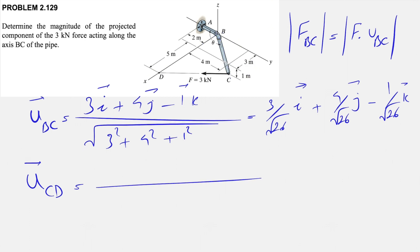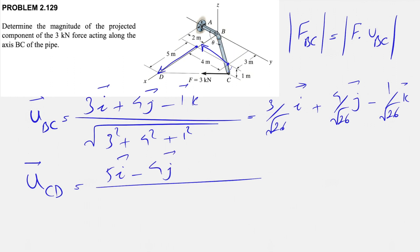Next we need to find the unit vector for CD. For the x-component, we are moving from here to here, which is 5. For the y-component, we are moving in the opposite direction so we'll have a negative sign. For the z-component, we start at −1 and go to the x-y plane, so we have a positive 1 for the k component.